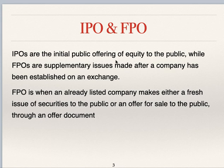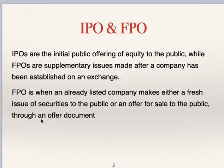IPOs are initial public offerings of equity to the public, while FPOs are supplementary issues made after a company has been established on an exchange. FPO is when an already listed company makes either a fresh issue of securities to the public or an offer for sale to the public through an offer document.